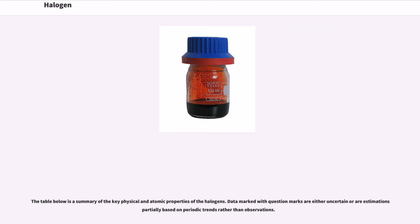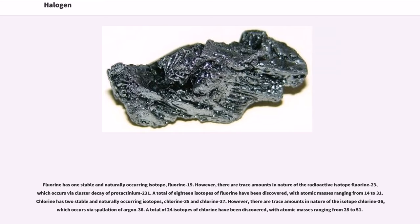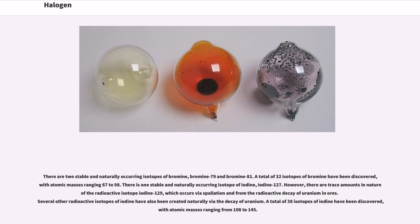The table below is a summary of the key physical and atomic properties of the halogens. Data marked with question marks are either uncertain or are estimations partially based on periodic trends rather than observations. Fluorine has one stable and naturally occurring isotope, fluorine-19. However, there are trace amounts in nature of the radioactive isotope fluorine-23, which occurs via clustered decay of protactinium-231. A total of 18 isotopes of fluorine have been discovered, with atomic masses ranging from 14 to 31. Chlorine has two stable and naturally occurring isotopes, chlorine-35 and chlorine-37, with trace amounts of chlorine-36, which occurs via spallation of argon-36. A total of 24 isotopes of chlorine have been discovered, with atomic masses ranging from 28 to 51. There are two stable and naturally occurring isotopes of bromine, bromine-79 and bromine-81. A total of 32 isotopes of bromine have been discovered, with atomic masses ranging from 67 to 98.